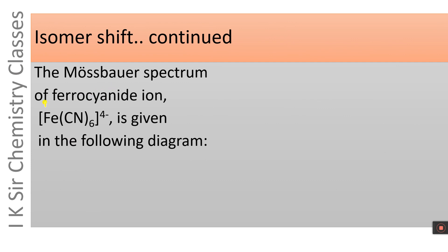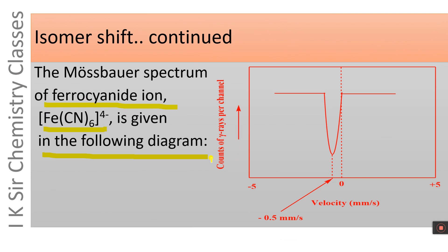The Mössbauer spectrum of the ferrocyanide ion, Fe(CN)₆⁴⁻, is given in the following diagram. On the x-axis we have Doppler velocity, and on the y-axis we have counts of gamma rays per channel, increasing in the upward direction. An absorption peak is obtained at minus 0.5 mm per second. At this Doppler velocity, the number of gamma rays is very small, indicating absorption. At this Doppler velocity of the source, ferrocyanide ion exhibits resonance absorption.